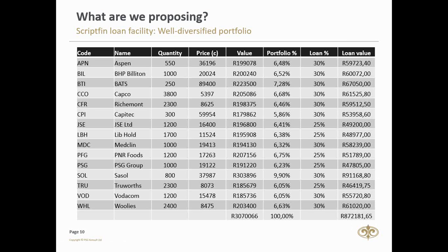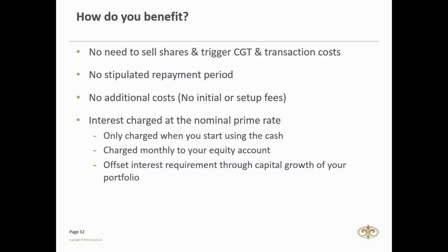On that R610,000 you're taking out, you're charged 10.5% per annum. That works out to roughly R64,000 for the year, divided by 12 — that's about R5,300 a month, or about R178 per day. That R178 is 0.005% of your whole portfolio per day. As long as your share portfolio is going up, the interest is being offset.